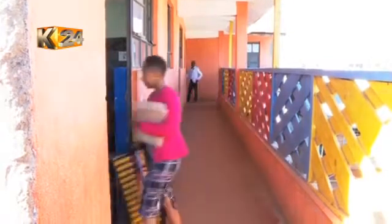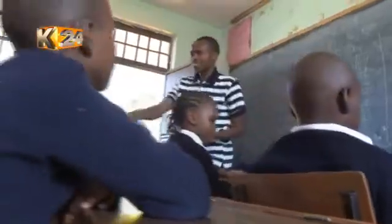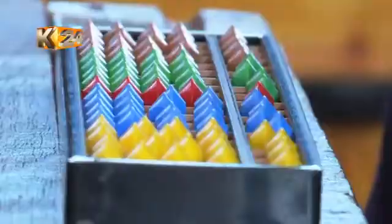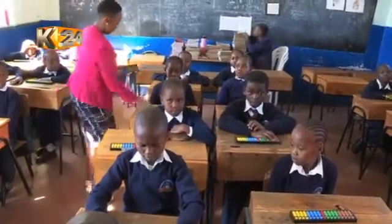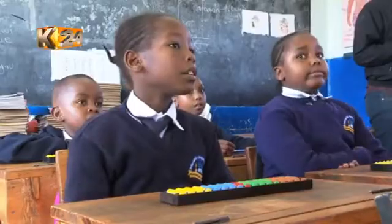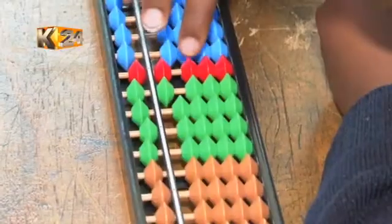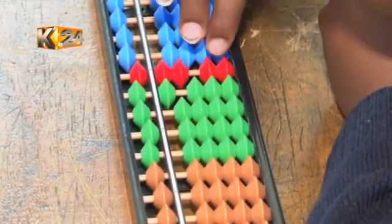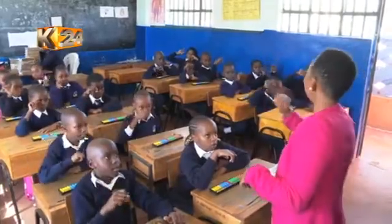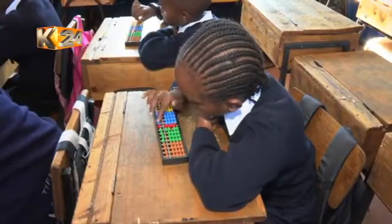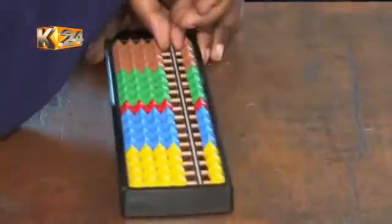Today's lesson is just about to commence and learners in this particular classroom are for the first time set to interact with an abacus — a calculating tool that traces its roots in Europe and Asia. It consists of a frame and beads sliding on a wire, initially used to solve simple arithmetic. In this classroom, however, it is used for more than that. In fact, to many here, this is the best thing to ever happen to them.